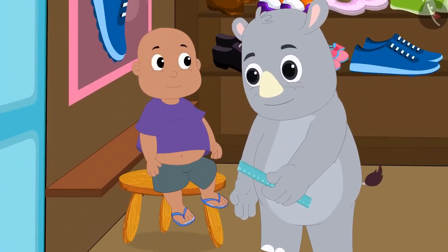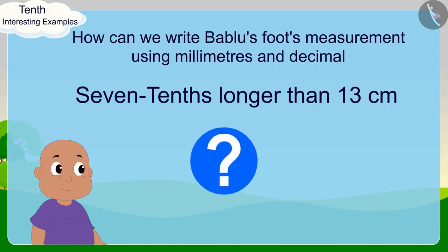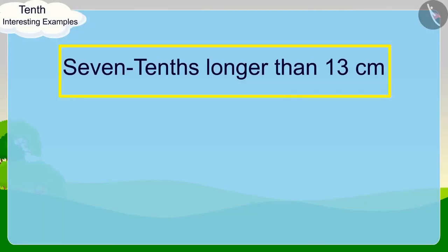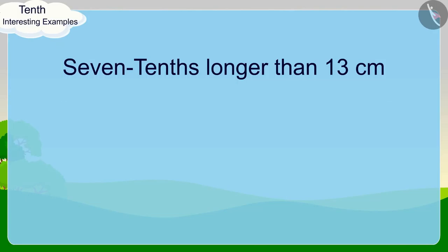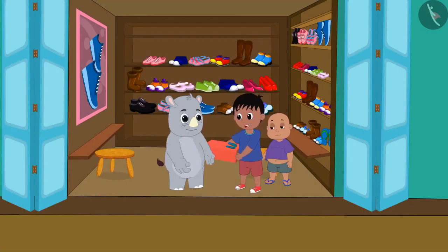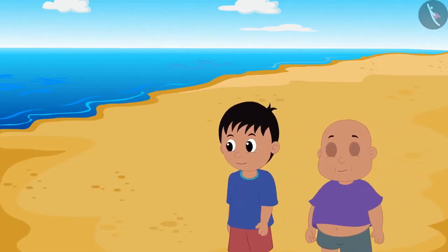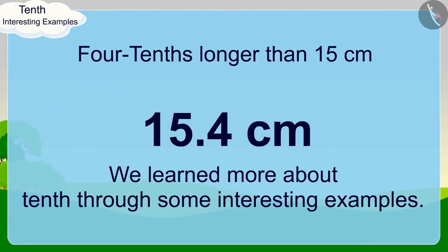Babalu's foot measurement is seven tenths longer than 13 centimetres. Children, can you tell how we can write Babalu's foot's measurement using millimetres and decimal? If you wish to, you may stop the video and find the answer. Babalu's foot measure is seven tenths longer than 13 centimetres. This means Babalu's foot measurement is 13 centimetres and 7 millimetres or 13.7 centimetres. Raju and Babalu bought their new slippers and happily went for a walk on the beach. In the next video, we will look at some of the misconceptions related to this.